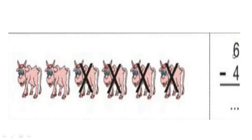The sum is 6 minus 4. There are 6 objects. Out of that, we have to cut 4 objects: 1, 2, 3, 4. If I want to know the difference, I count the remaining objects: 1 and 2. There are 2 objects remaining. So 6 minus 4 equals 2.